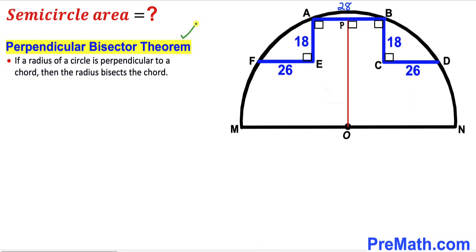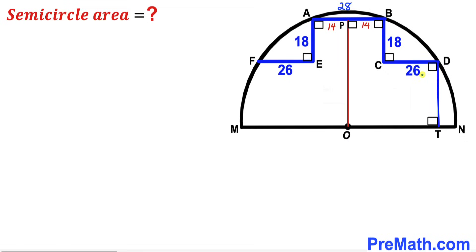Let's recall the perpendicular bisector theorem. According to this theorem, if a radius of a circle is perpendicular to a chord, then the radius bisects the chord. So chord AB has been divided into two equal parts: segment AP and segment BP. Since chord AB is 28 units, segment AP is 14 and segment BP is 14 units as well.